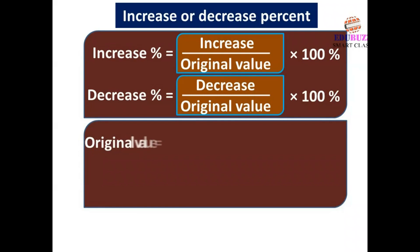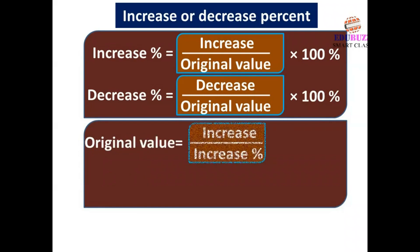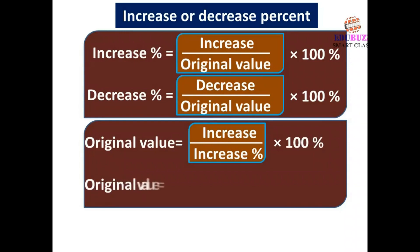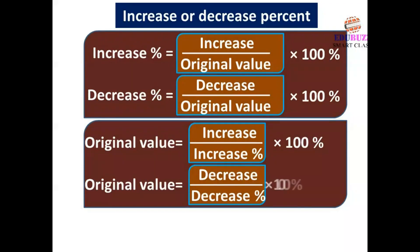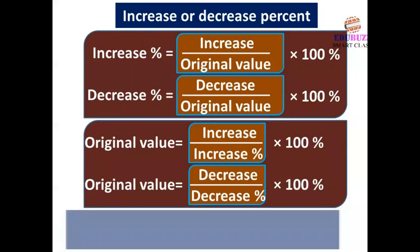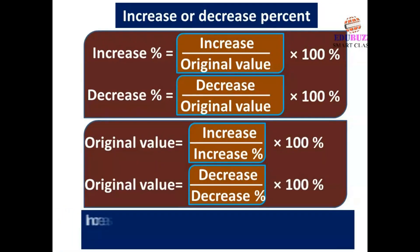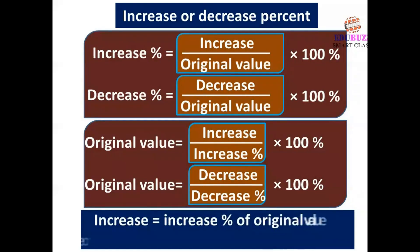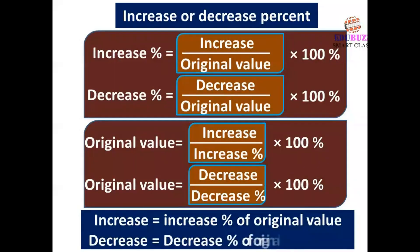Original value = (Increase ÷ Increase percent) × 100%. Original value can also be found from decrease: Original value = (Decrease ÷ Decrease percent) × 100%. Decrease = Decrease percent of original value.